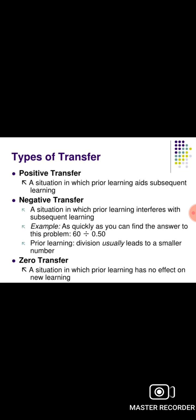Negative transfer occurs when prior knowledge interferes with new learning. If we apply previous knowledge to a new situation in a way that hinders performance, that is the negative transfer.